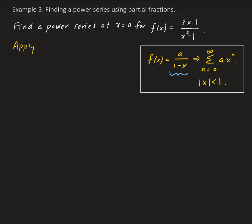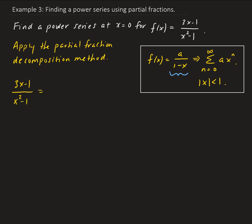We're going to apply the partial fraction decomposition method. We have (3x - 1) all over (x² - 1). The denominator is going to be broken up as (x - 1)(x + 1). So we're going to have A over (x - 1) and B over (x + 1). We can go ahead and solve for A and B. We're going to have A times (x + 1) plus B times (x - 1) equal to 3x - 1.